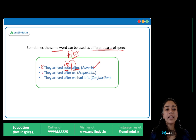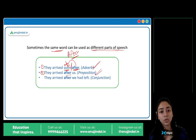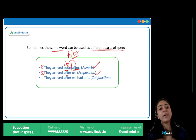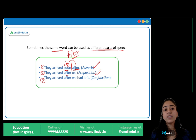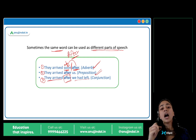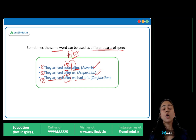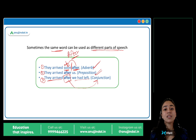In the next sentence: 'They arrived after us.' Yahaan pe position ki baat ho rahi hai — hum pehle aaye, woh baad mein aaye. Toh yahaan pe after is a preposition. And in the third sentence: 'They arrived after we had left.' Yahaan pe after donon ko join kar raha hai — donon ko connect kar raha hai. Toh yahaan pe after is a conjunction. So you can see ki ek hi word can be used as adverb, preposition, or conjunction — depends on how it is used in a sentence.